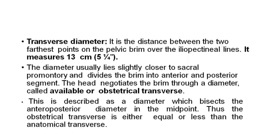Transverse diameter: It is the distance between the two farthest points on the pelvic brim over the iliopectineal lines and measures 13 cm. The diameter lies slightly closer to the sacral promontory and divides the brim into anterior and posterior segments. The head negotiates the brim through a diameter called the available or obstetrical transverse, which bisects the anteroposterior diameter at the midpoint. Thus, the obstetrical transverse is either equal to or less than the anatomical transverse.